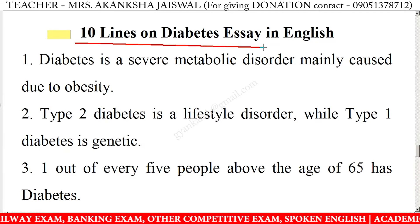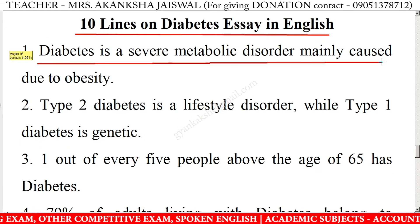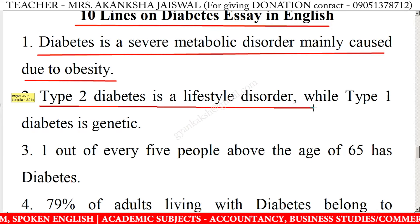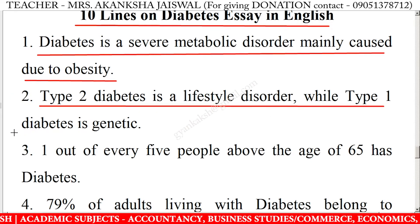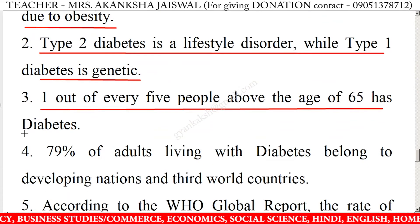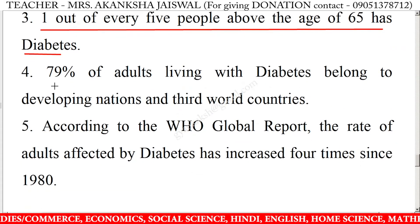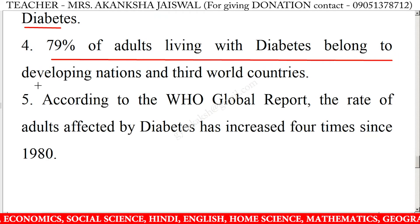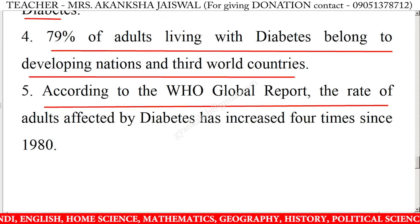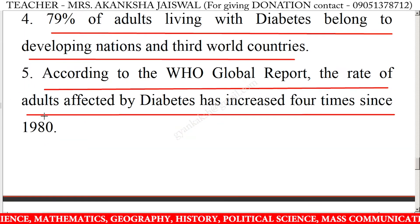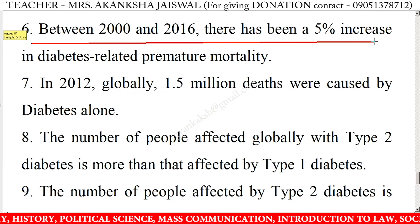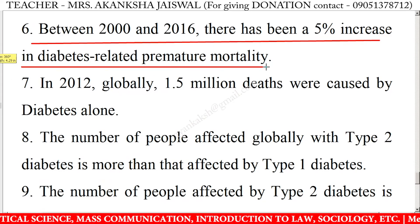Ten lines on diabetes essay in English. Diabetes is a severe metabolic disorder mainly caused due to obesity. Type 2 diabetes is a lifestyle disorder while type 1 diabetes is genetic. 1 out of every 5 people above the age of 65 has diabetes. 79% of adults living with diabetes belong to developing nations and third world countries. According to the WHO global report, the rate of adults affected by diabetes has increased 4 times since 1980.